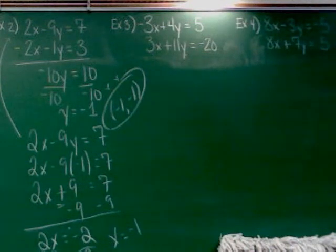All right. Sample three. Negative three X plus four Y equals five. Three X plus 11 Y equals negative 20. All right, so everything's lined up.